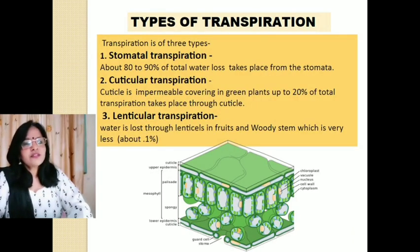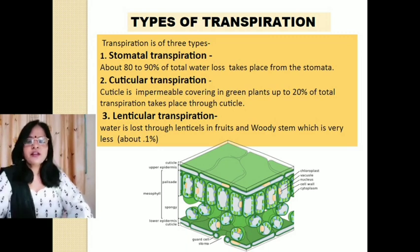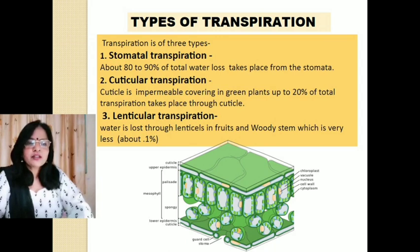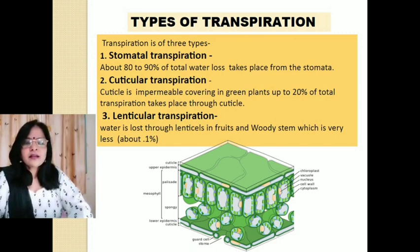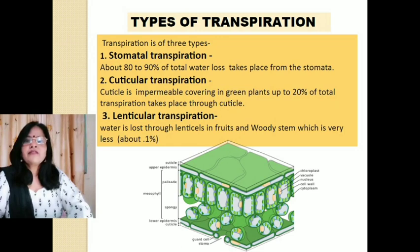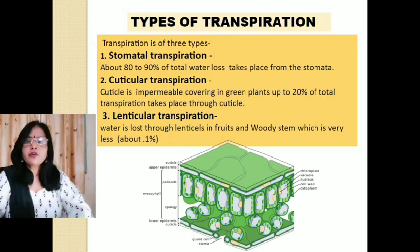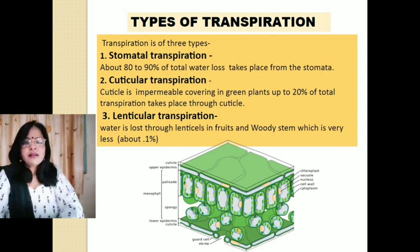Transpiration is of three types: stomatal transpiration, cuticular transpiration, and lenticular transpiration. In stomatal transpiration, about 80 to 90% of total water loss takes place from tiny pores called stomata. Cuticular transpiration occurs through the cuticle, which is an impermeable layer consisting of cutin covering the outer epidermis of green plants — up to 20% of total transpiration takes place through the cuticle.